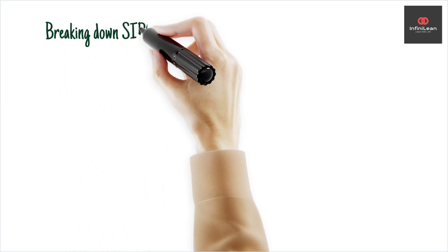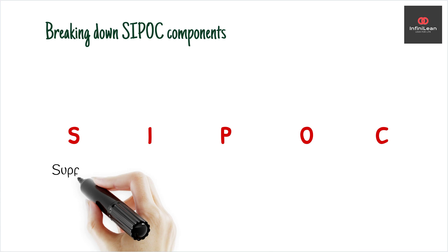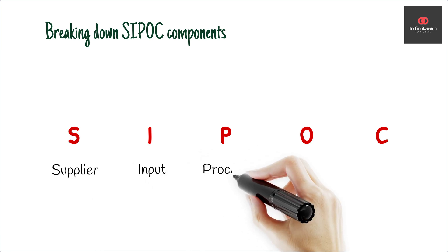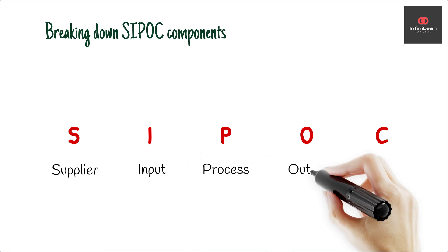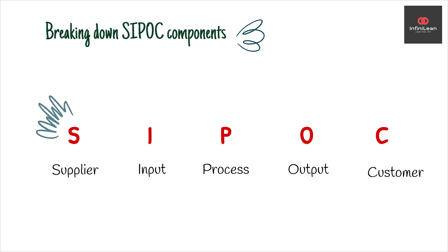SIPOC stands for Supplier, Input, Process, Output, and Customer. It's a high-level tool to identify all the relevant elements of a process improvement project before work begins.